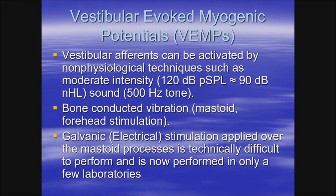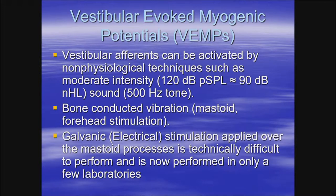For sound stimulation to record a vestibular signal, one can use clicks, but a higher stimulus intensity is needed than in brainstem auditory evoked potentials — at least 110 decibels above average hearing threshold instead of 70. If you have tone stimulation capability, the best tone is 500 Hz, at which you can use 90 decibels.